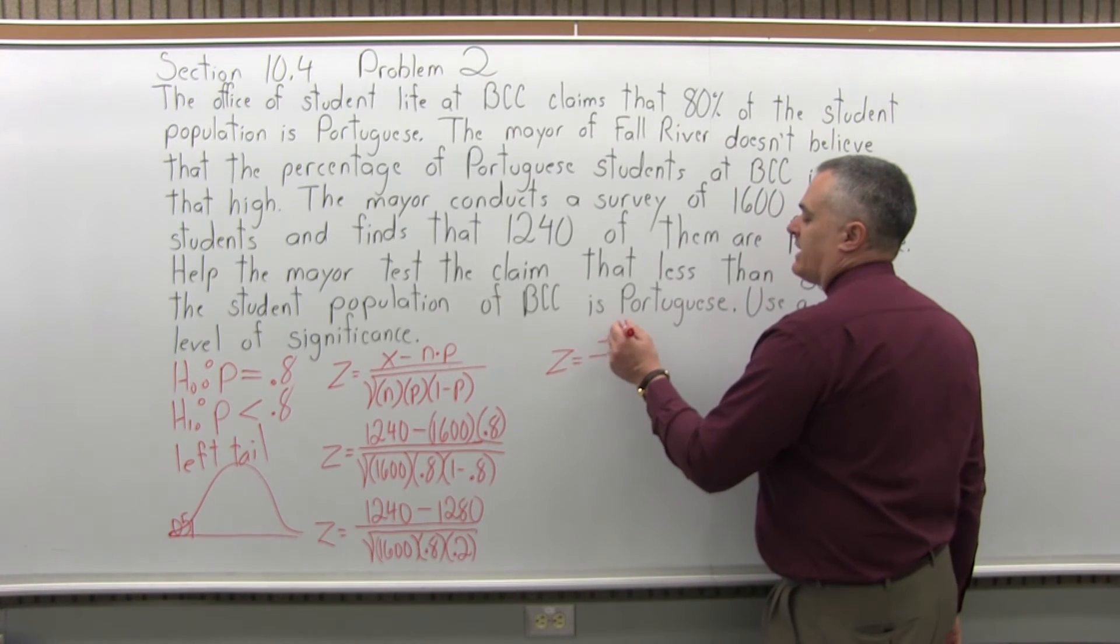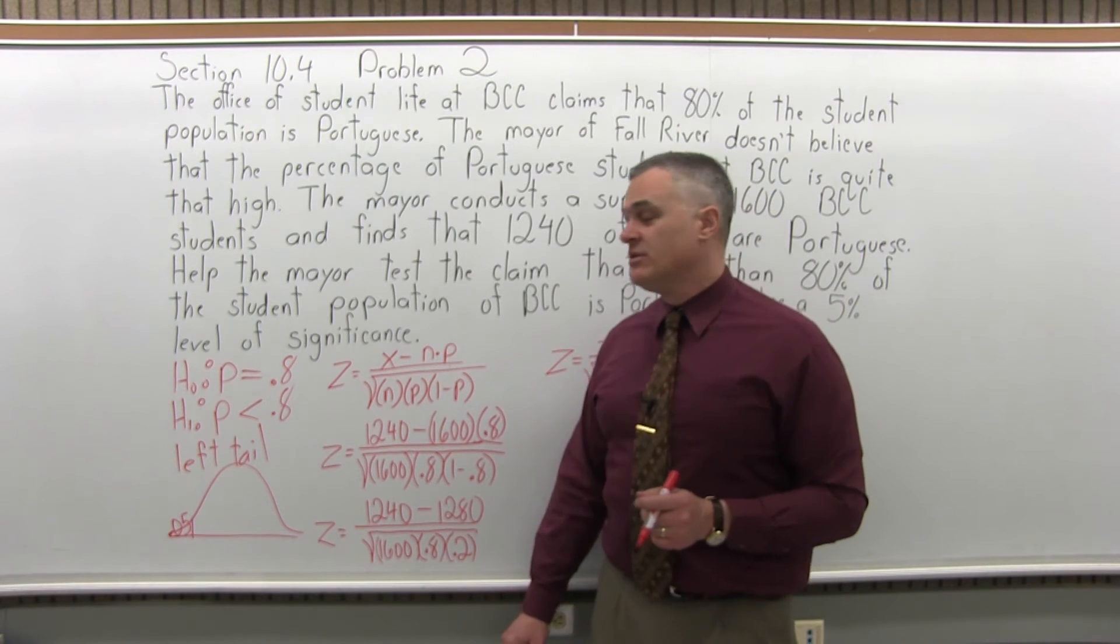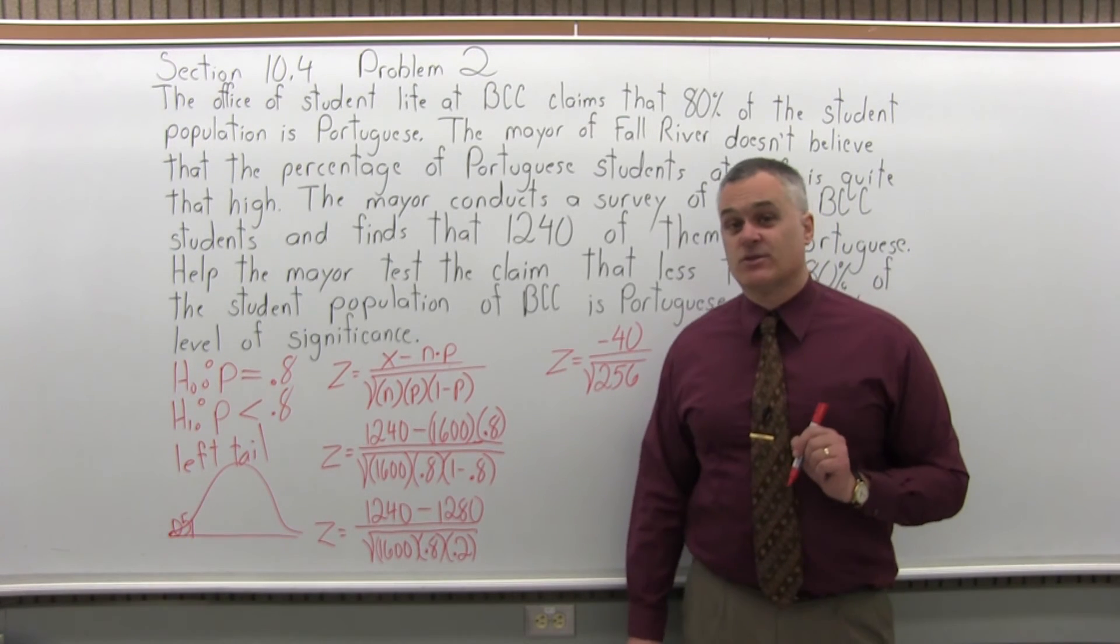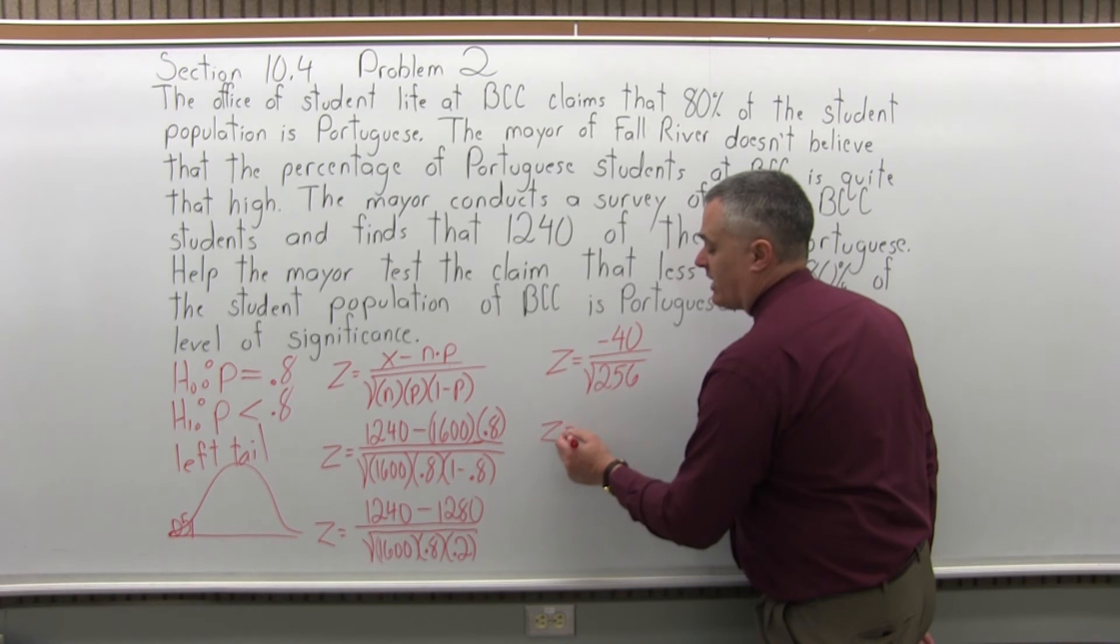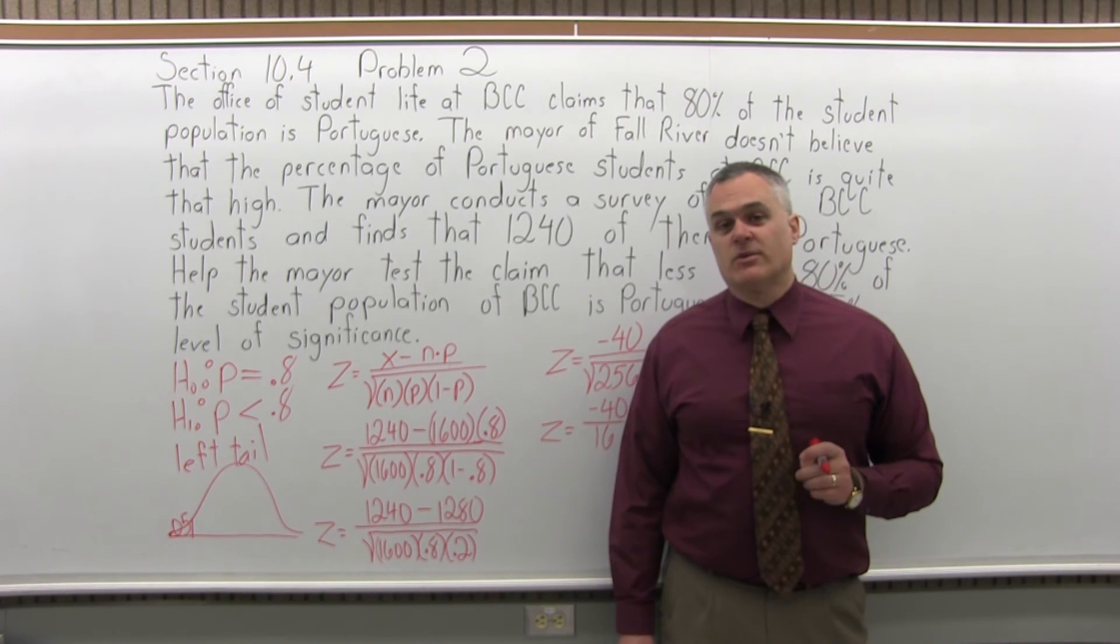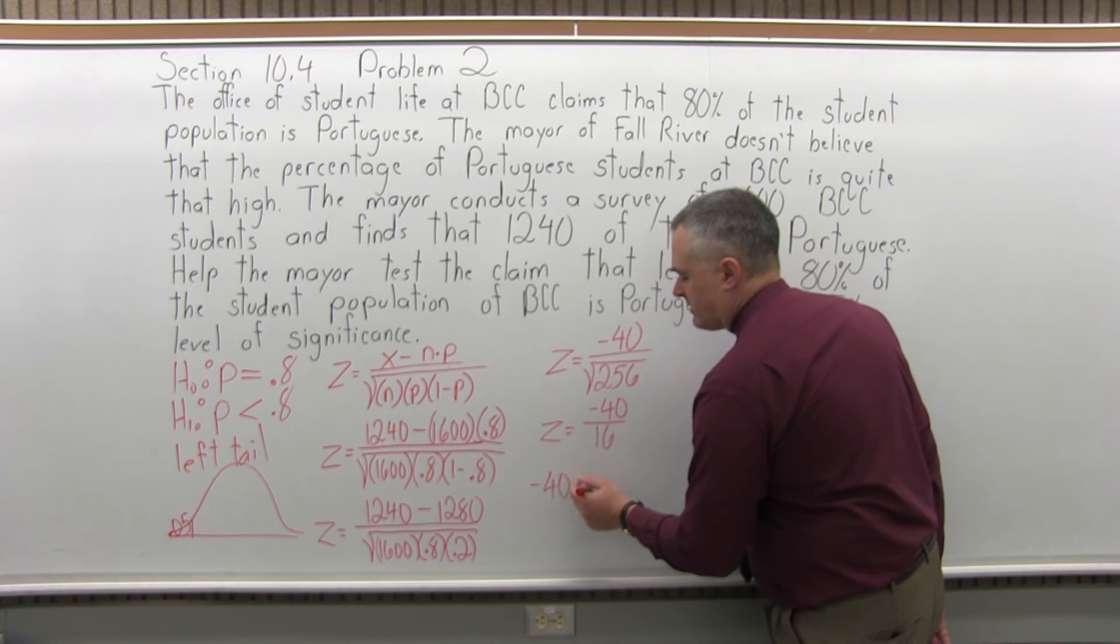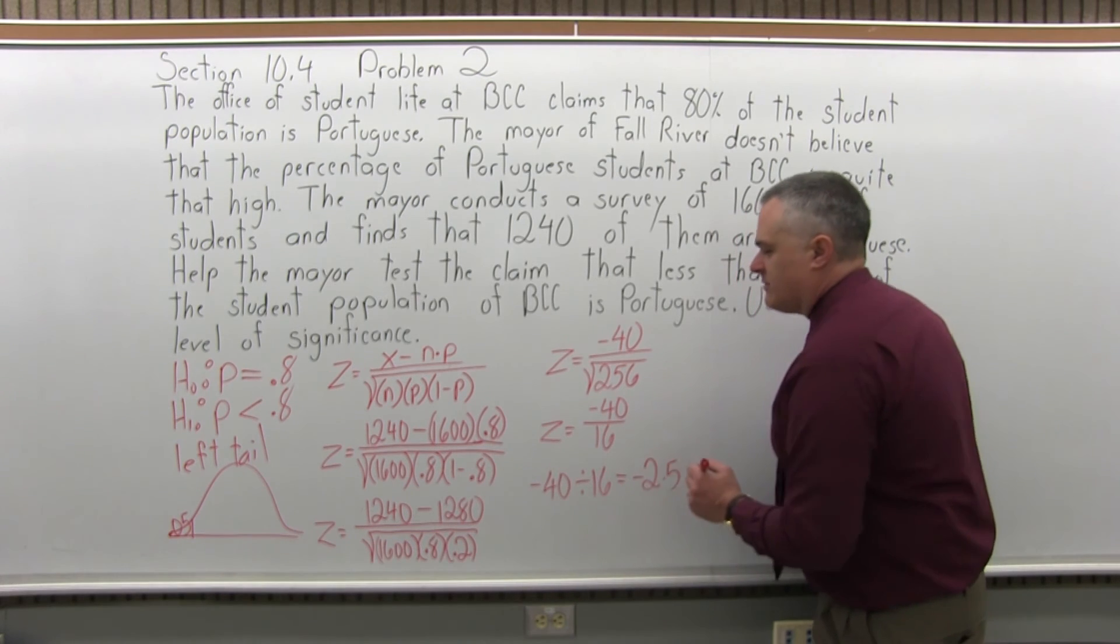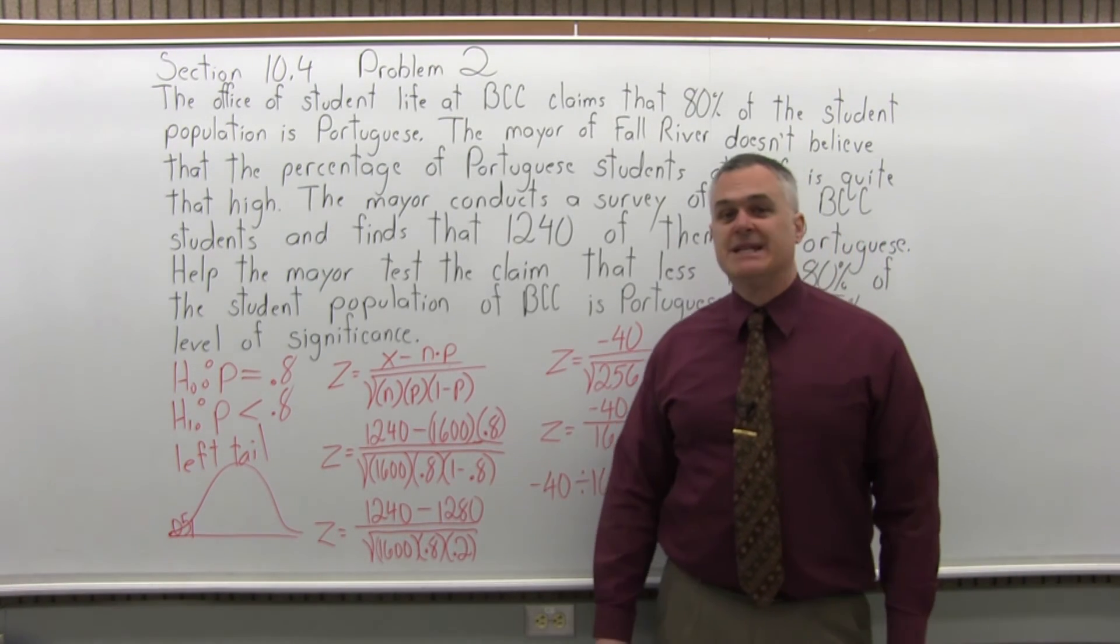So I have negative 40 in the numerator. And if I multiply the denominator, 1,600 times 0.8 times 0.2, that multiplication will come out to 256. Don't forget the square root. That's a pretty common mistake. Also, not paying attention to the sign is another fairly common mistake. So now I can take that square root, the numerator is still negative 40. In the denominator, square root of 256 is 16. So now I can actually do that division. Negative 40 divided by 16 will be negative 2.5. Comes out a pretty nice number. So that's step 4. We calculated z. We got z is negative 2.5.